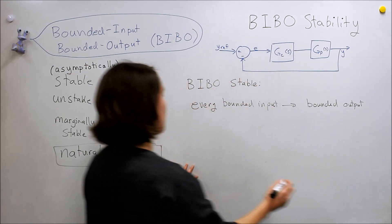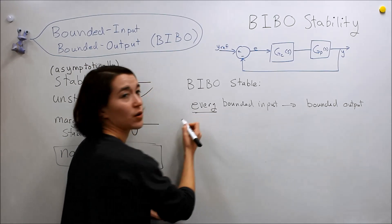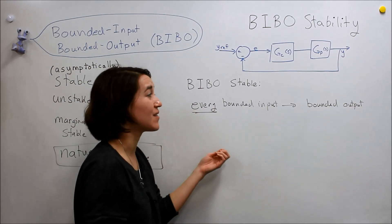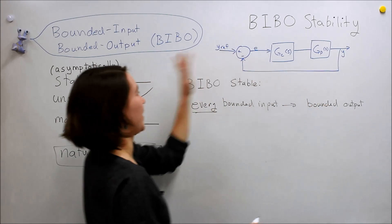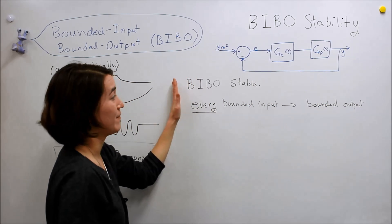And it's important that we are emphasizing every single one. So if there's just one signal that creates an unbounded output, we do not qualify for being BIBO stable.